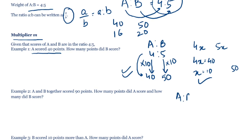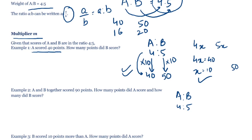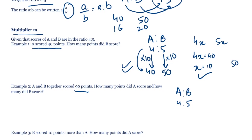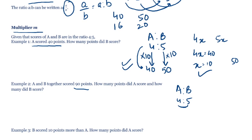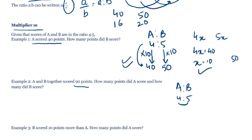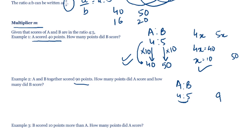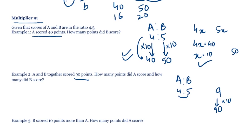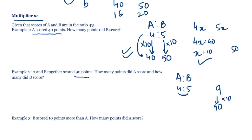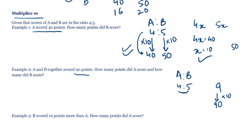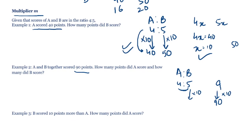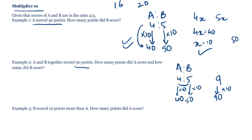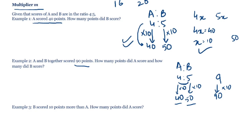Another example: scores of A and B are still in the ratio 4 to 5, and A and B together scored 90 points. In ratio terms, A scored 4 and B scored 5, so together they scored 9 in ratio terms. This 9 equals 90 in actual value, giving us a multiplier of 10. So A scored 40 points and B scored 50 points.